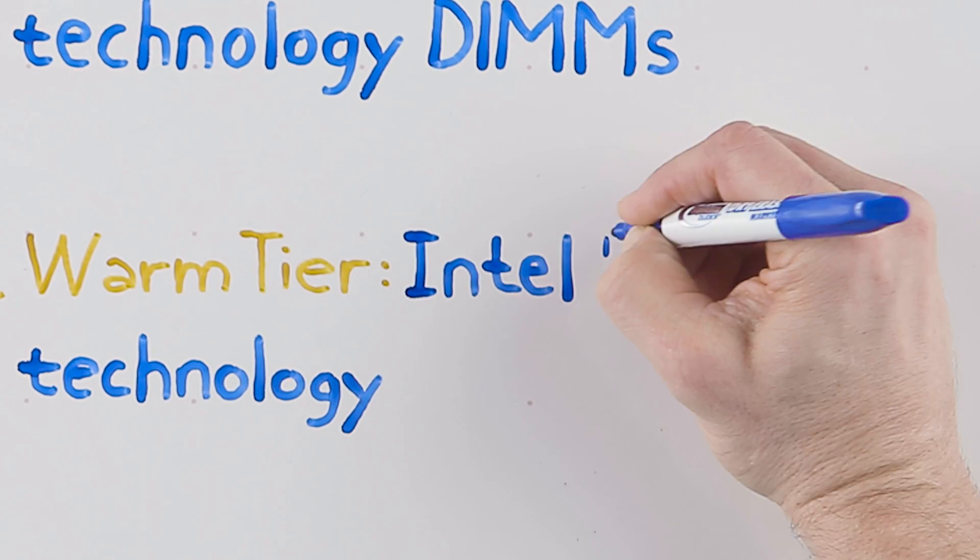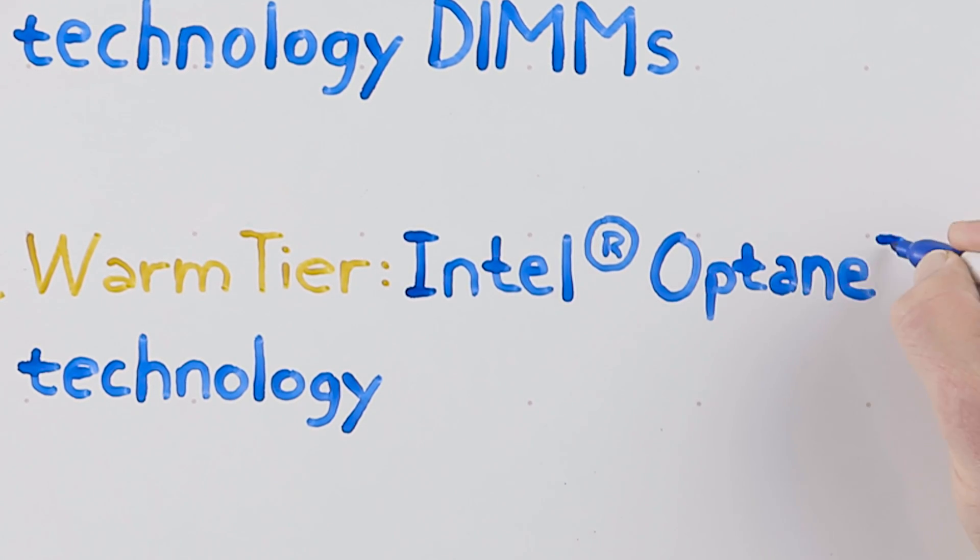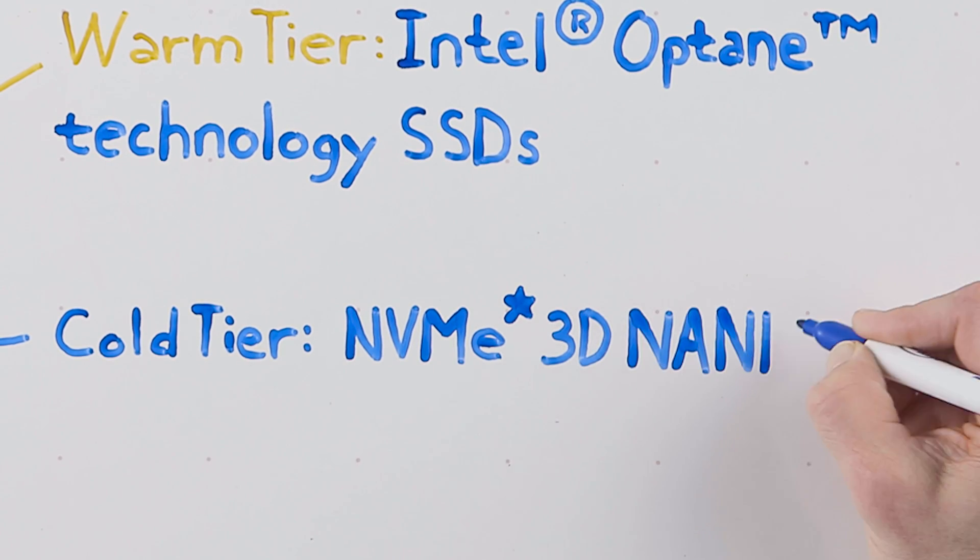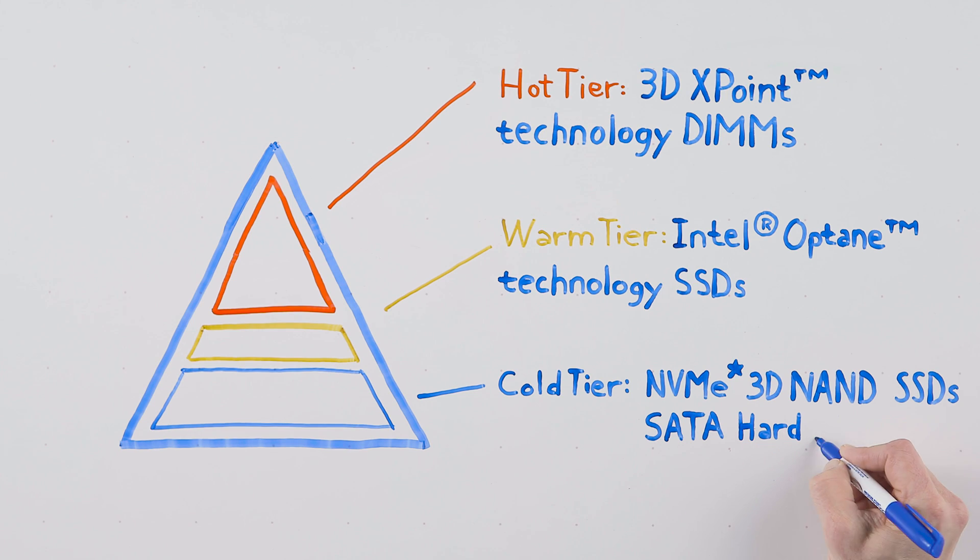The NAND-based SSDs in the warm tier will be replaced by SSDs built on Intel Optane technology, and 3D NAND SSDs are going to increasingly displace the spinning disk hard drives in the cold tier.